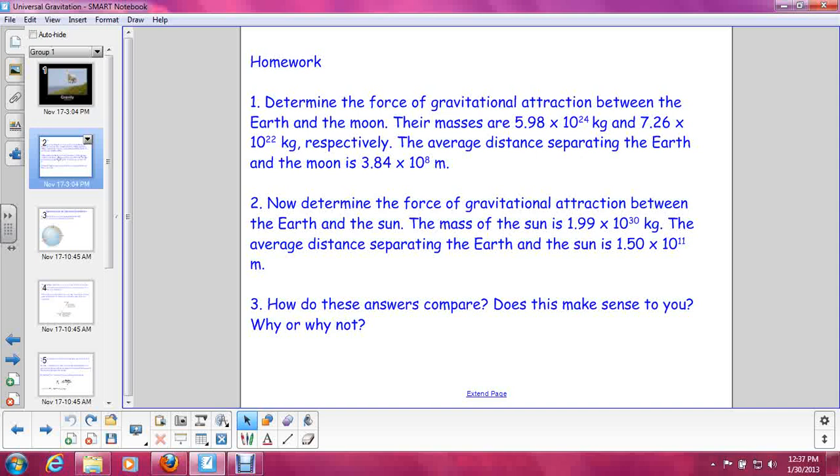Number two, now determine the force of gravitational attraction between the Earth and the Sun. The mass of the Sun is 1.99 times 10 to the 30th kilograms. And the average distance separating the Earth and the Sun is 1.5 times 10 to the 11th meters. Number three, how do these two answers compare? Does this make sense to you? And why or why not?